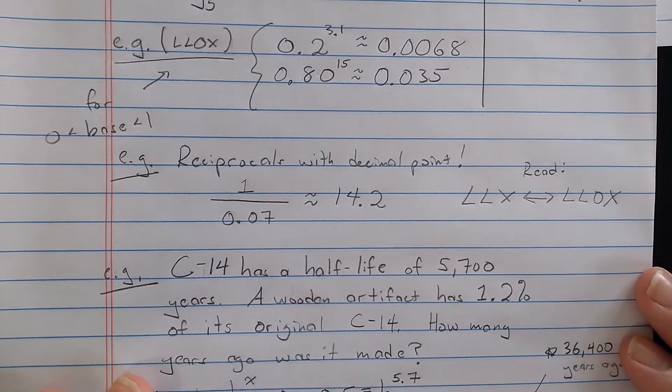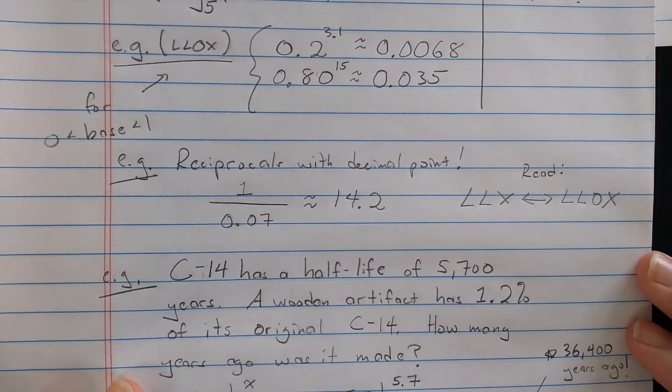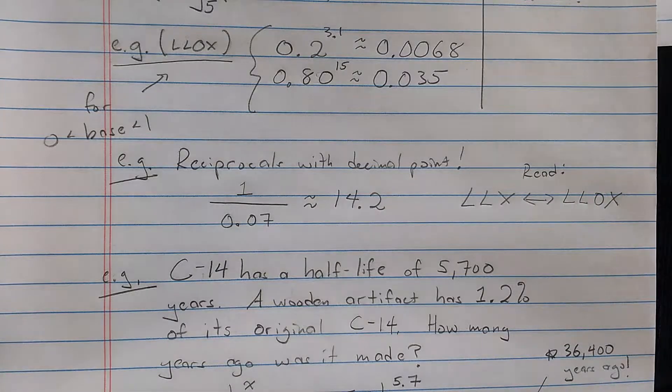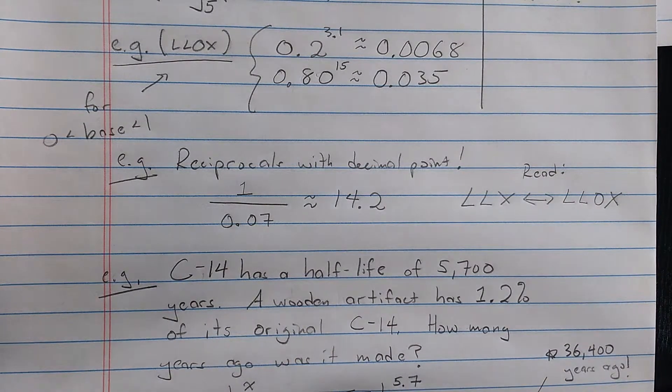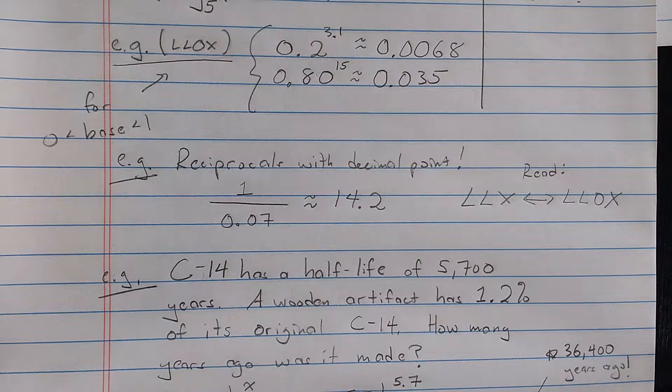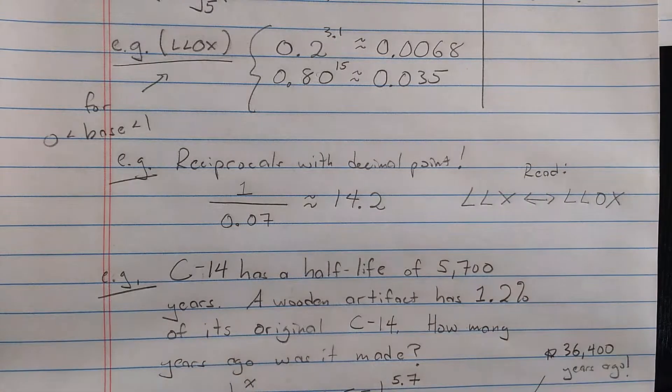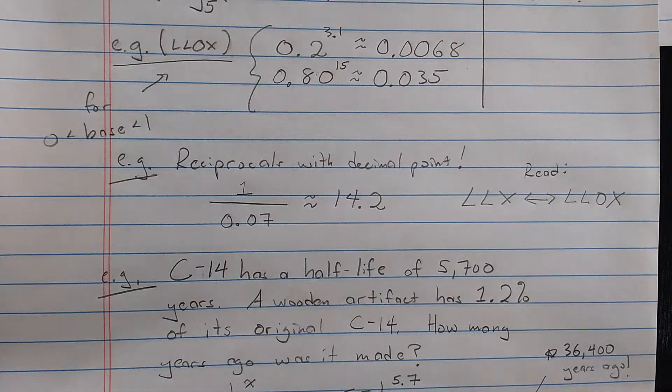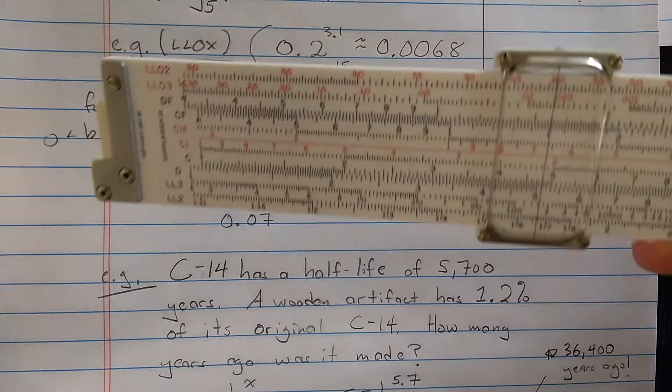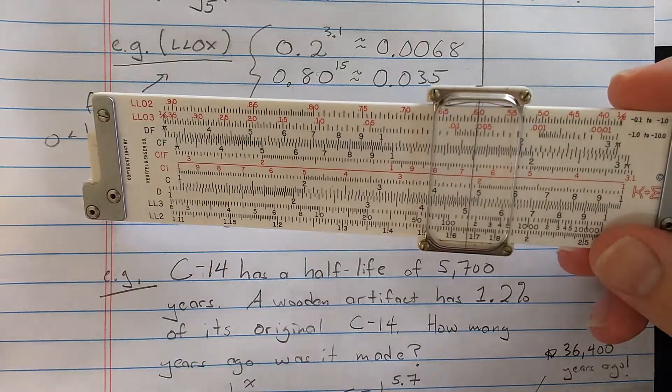As a final application, I will solve this half-life problem. Carbon-14 has a half-life of 5,700 years. A wooden artifact has 1.2% of its original carbon-14. How many years ago was it made? So we know that carbon-14 will decay exponentially, or at least that's our assumption.